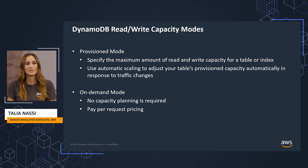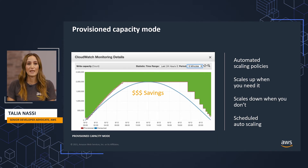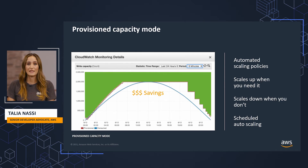Let's dive deeper into each of these modes and see how DynamoDB manages your throughput. With provisioned capacity mode, you specify the maximum amount of read and write capacity for a table, and then you use automatic scaling to adjust your table's provisioned capacity automatically in response to traffic changes. Here's a CloudWatch monitoring view of provisioned capacity and usage.